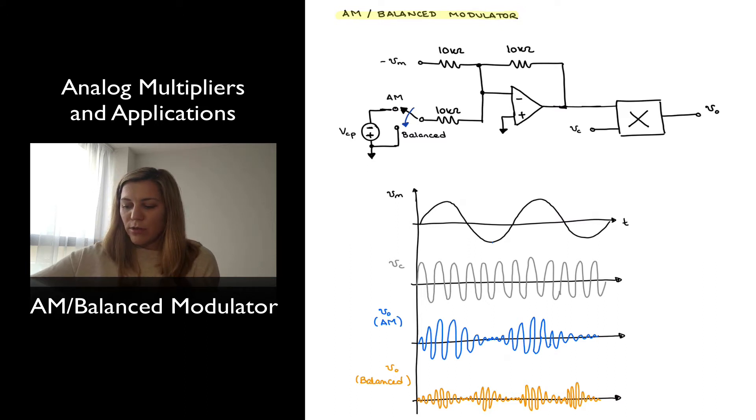So on the inverting side, I have my modulating signal, or the negative of my modulating signal, which is going to be minus VMP times sine of 2 pi fm times t.